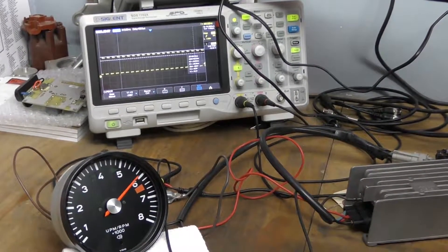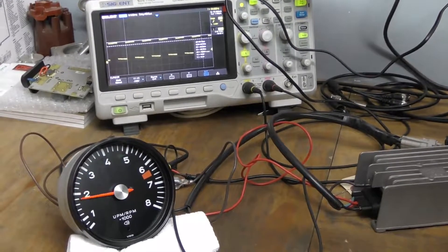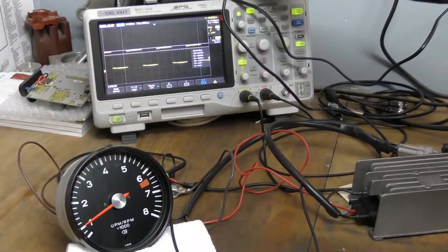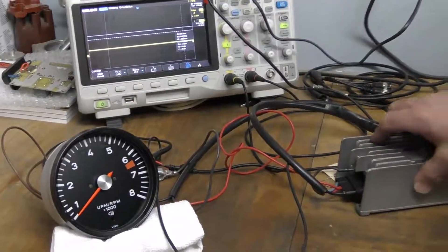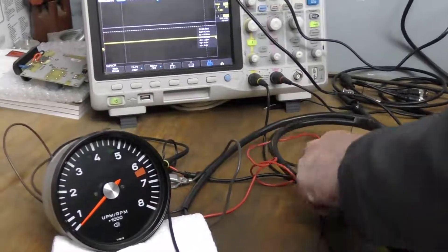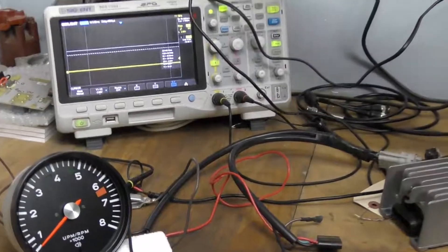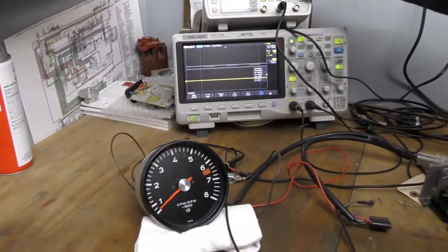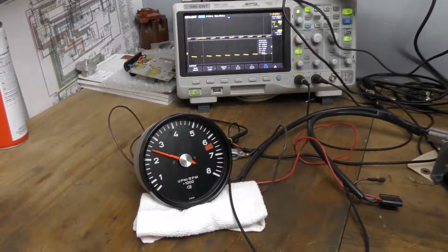So we can also test it without running the CDI box. I'm just going to drop the ground signal off and pull the power plug from that. Then if I turn my wave generator back on I can still simulate and test a tachometer without it. Do the same thing because I'm just feeding it a signal, and then go ahead and turn it off.